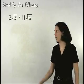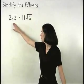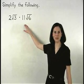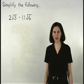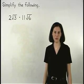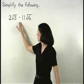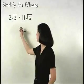To multiply 2 root 3 times 11 root 6, we simply multiply the numbers that are outside the radicals together. 2 times 11 is 22.